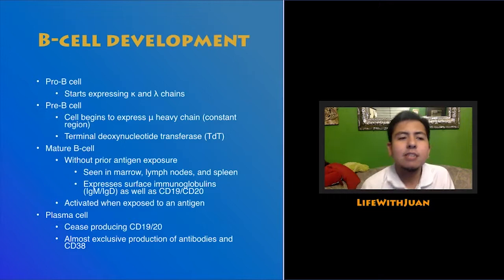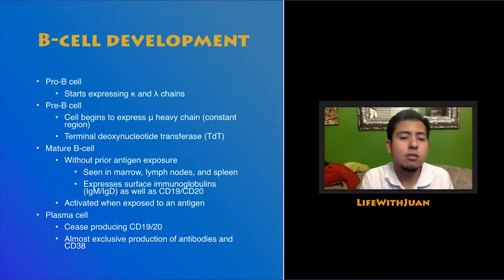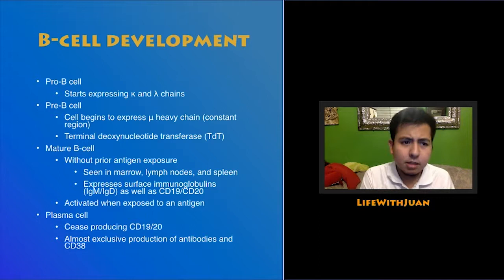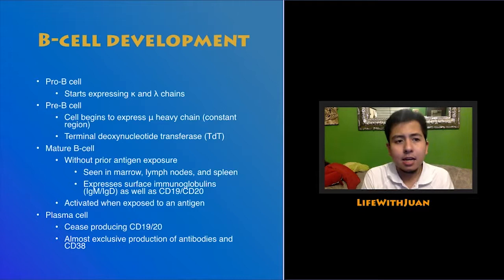How do B cells develop? The lymphoid progenitor cell turns into a pro-B cell, which expresses kappa and lambda chains — the primitive antibody chains. The pro-B cell then turns into the pre-B cell, which produces the mu constant region of the heavy chain. Pre-B cells also express terminal deoxynucleotide transferase, an enzyme important for splicing the B cell's DNA, which is important for its rearrangement.